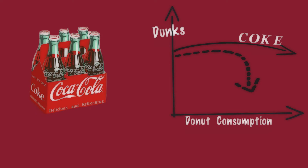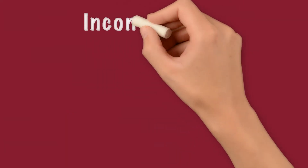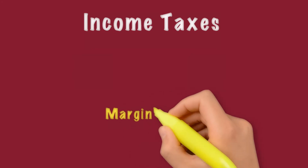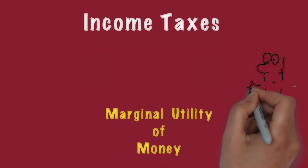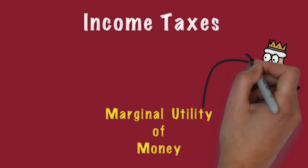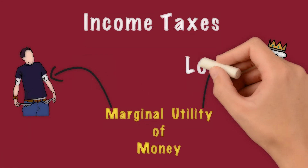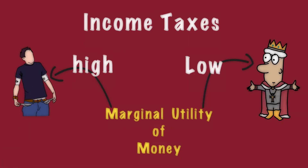The idea of diminishing marginal utility is seen in all sorts of places, even in income taxes. Income taxes follow a progressive tax rate structure, which means the rate of taxation increases with an increase in income. The logic is based on the assumption that the rich have lower marginal utility of money compared to poor people — hence, the rich should be taxed higher.